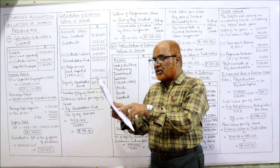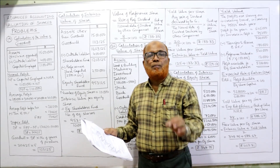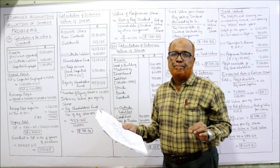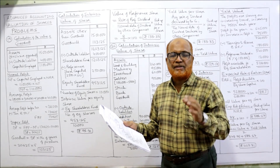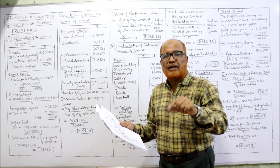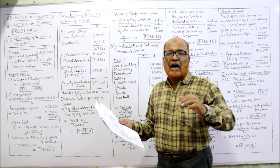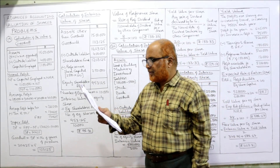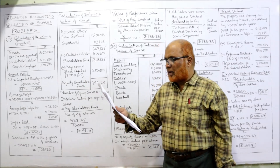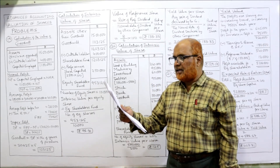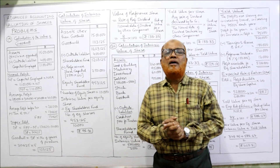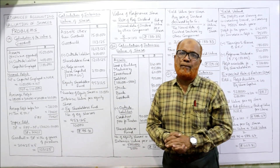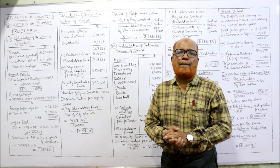Before calculating the value of shares, we first need to calculate the value of goodwill using the super profit method. We calculate super profit, then multiply by 5 to get the goodwill value. After taking into account the goodwill value, we calculate the intrinsic value. Assuming taxation at 50%, we are asked to value both preference shares and equity shares in XY Limited.